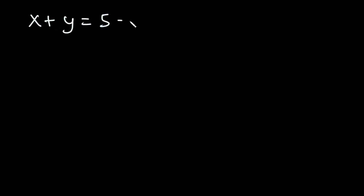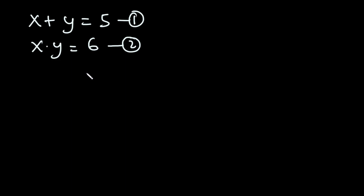Let's begin with this example: if x plus y is equal to five, and x times y is equal to six, how do we solve these two equations simultaneously? To solve for x and y, we first need to make either x or y the subject from one of the two equations. Let's make x the subject from the first equation by transposing y to the right-hand side, so x is equal to five minus y. Let's call this equation three.